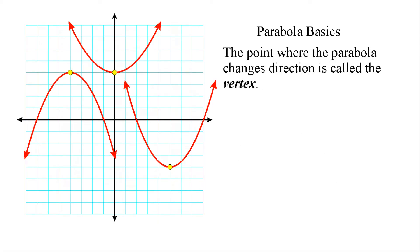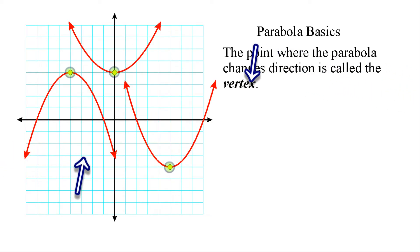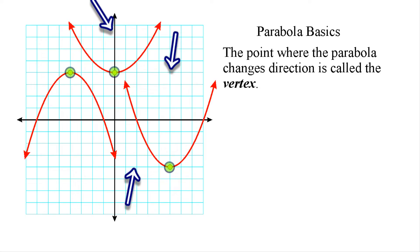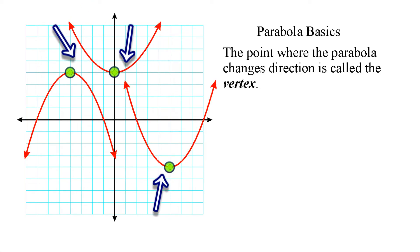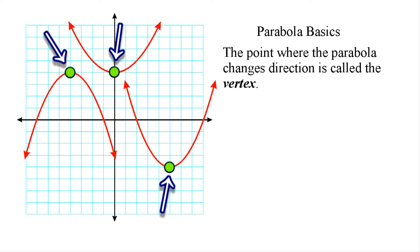Something else that we should understand about parabolas is what a vertex is. The vertex of a parabola is just the point where the parabola changes direction. So when looking at parabolas, you will notice that some of them start to rise from the left, and then they reach a certain point, and then at that point, they start to fall. Or some parabolas start by falling, and then at some point, they get as low as they can go, and then they start rising again. So the vertex really is just the point where the parabola changes direction.